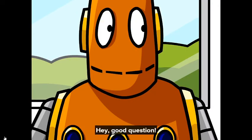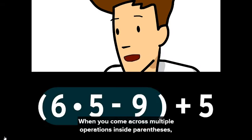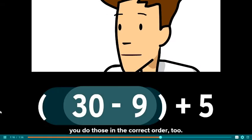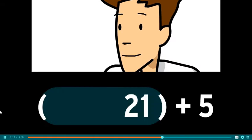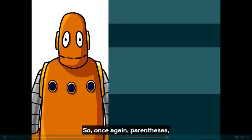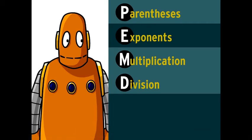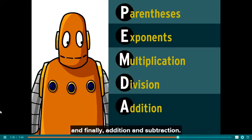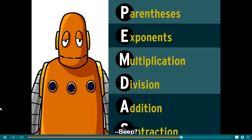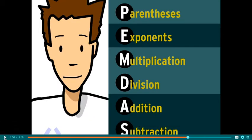When you come across multiple operations inside parentheses, you do those in the correct order too, then you do the stuff outside. So once again: parentheses, then exponents, then multiplication and division, and finally addition and subtraction. There are easier ways to remember this.